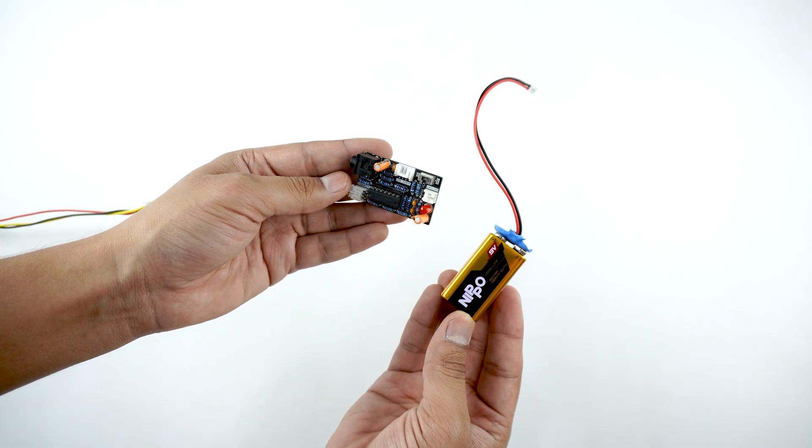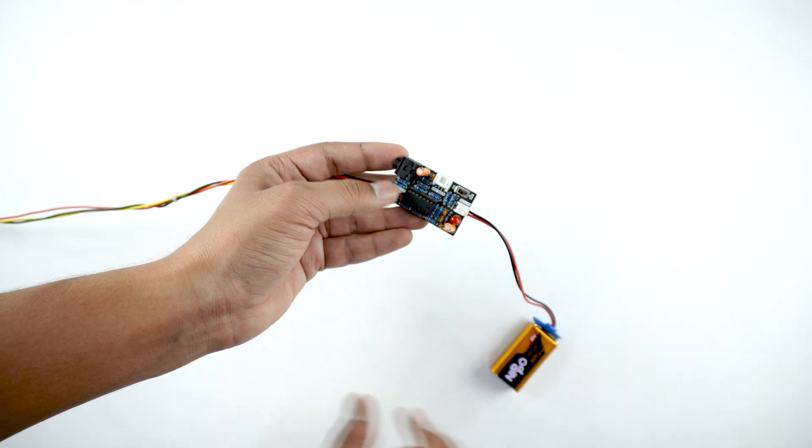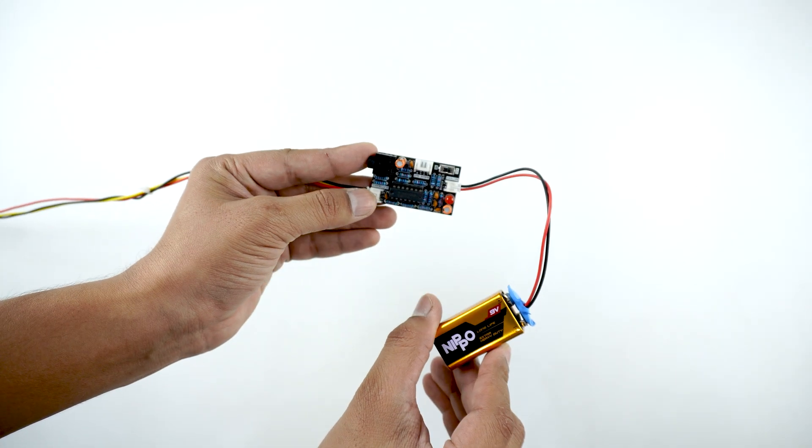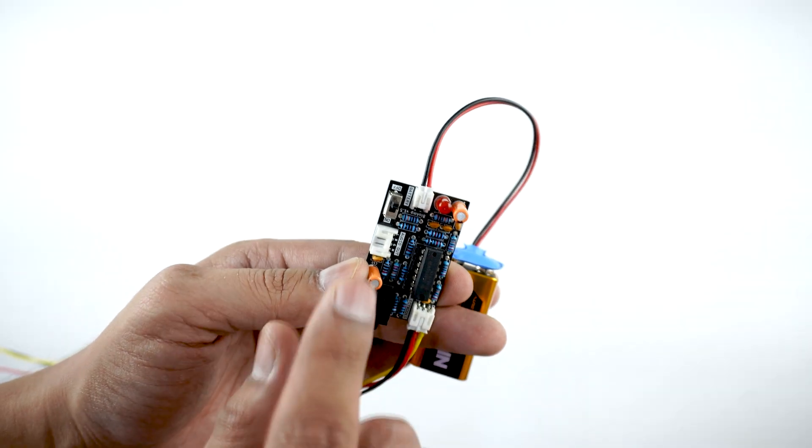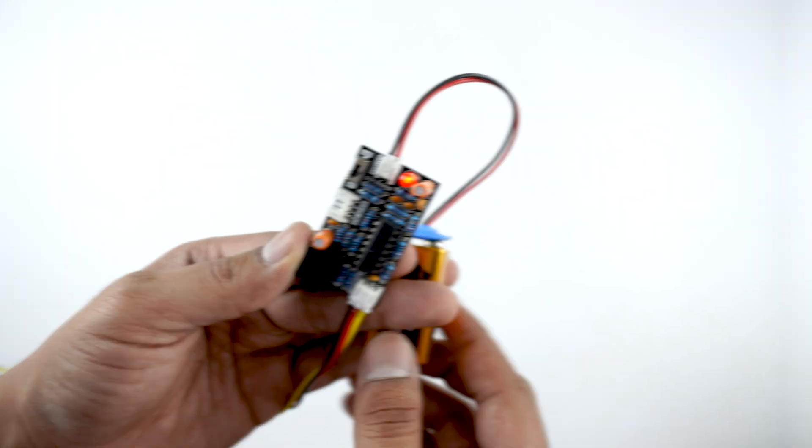Finally, it's time to switch on the BioAmp version 1.5 by plugging a 9 volt battery via a 9 volt snap cable to this port and turning on the switch. The red LED glows, which means everything is correct.